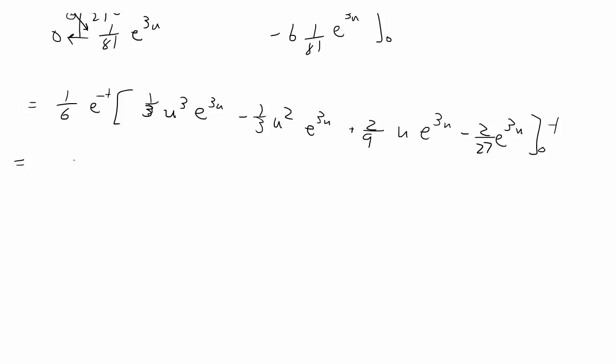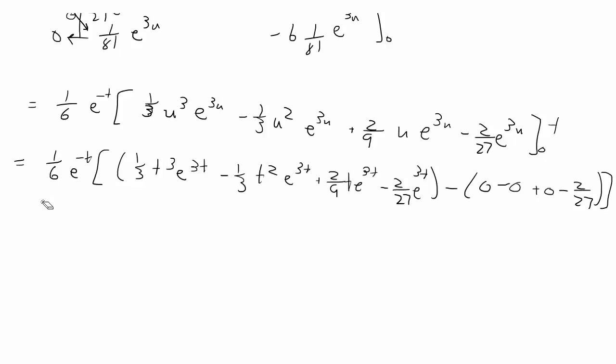So we're going to get 1/6 e^(-t), and then plugging in t first you'll get 1/3 t^3 e^(3t) minus 1/3 t^2 e^(3t) plus 2/9 t e^(3t) minus 2/27 e^(3t) minus 2/27. And then we're simplifying that. So that would be 1/6 e^(-t) times 1/3 t^3 minus 1/3 t^2 e^(3t) plus 2/9 t e^(3t) minus 2/27 e^(3t) plus 2/27.